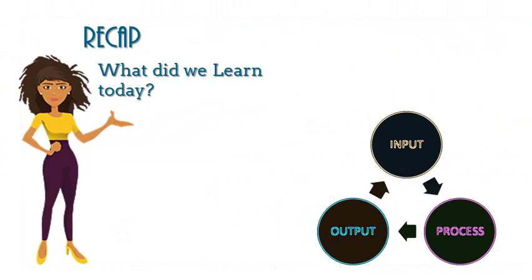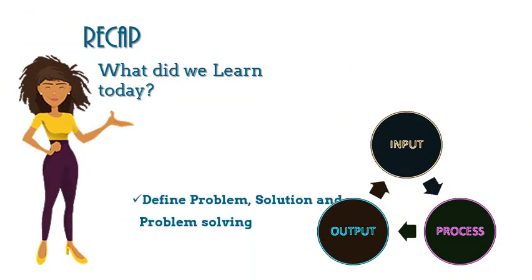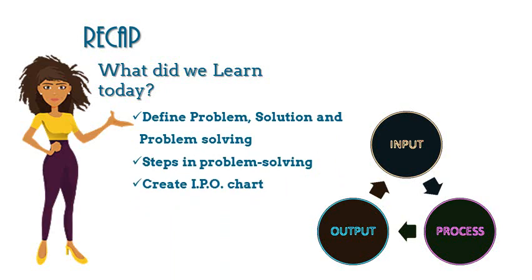Now let's review what we learned today. We defined what a problem is and what a solution is. We said the process of going from a problem to a solution is called problem solving. We looked at the five steps in problem solving and we were able to create what are called IPO charts. Please review the specialist segment on IPO chart creation, as there will be an activity on Thursday.